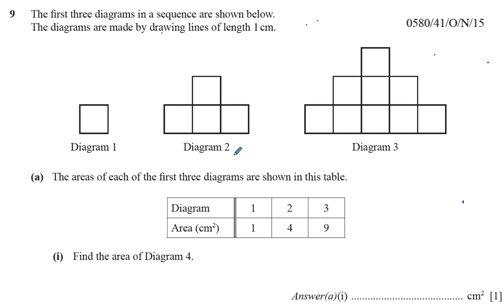It tells us in this question that we have three diagrams — diagram one, two, and three — and the areas of each of the first three diagrams are shown in this table. These diagrams are all made by one centimeter lines, so these are squares. We've got four squares here, so if they're one centimeter, the area of this is going to be one square centimeter. This will be four square centimeters.